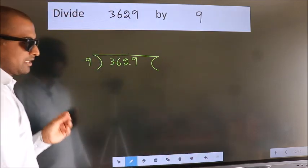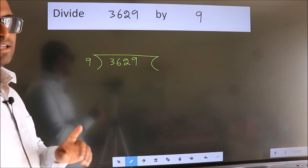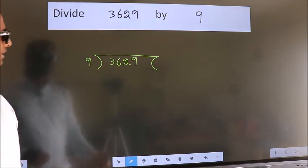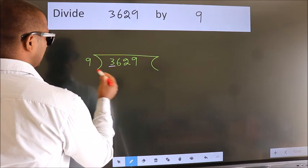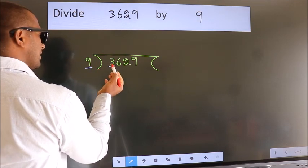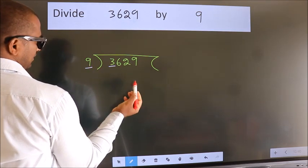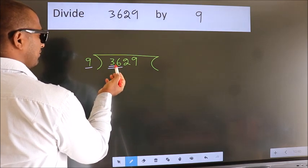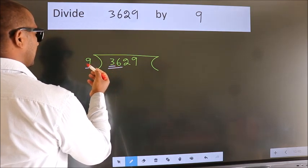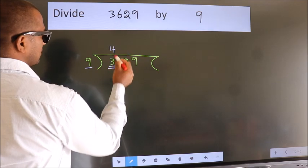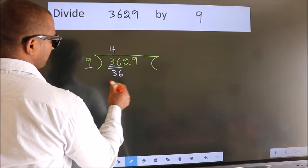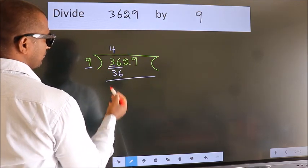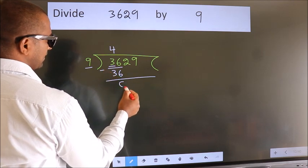This is your step 1. Next, here we have 3. Here 9. 3 smaller than 9. So we should take 2 numbers, 36. When do we get 36 in 9 table? 9 fours 36. Now we should subtract. We get 0.